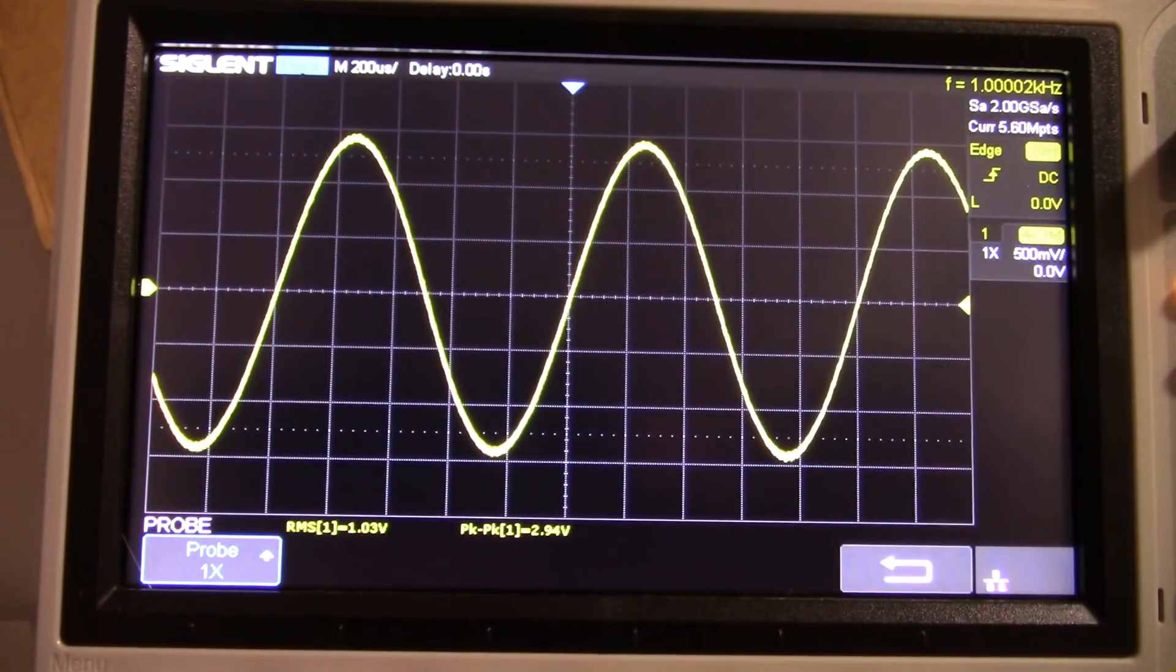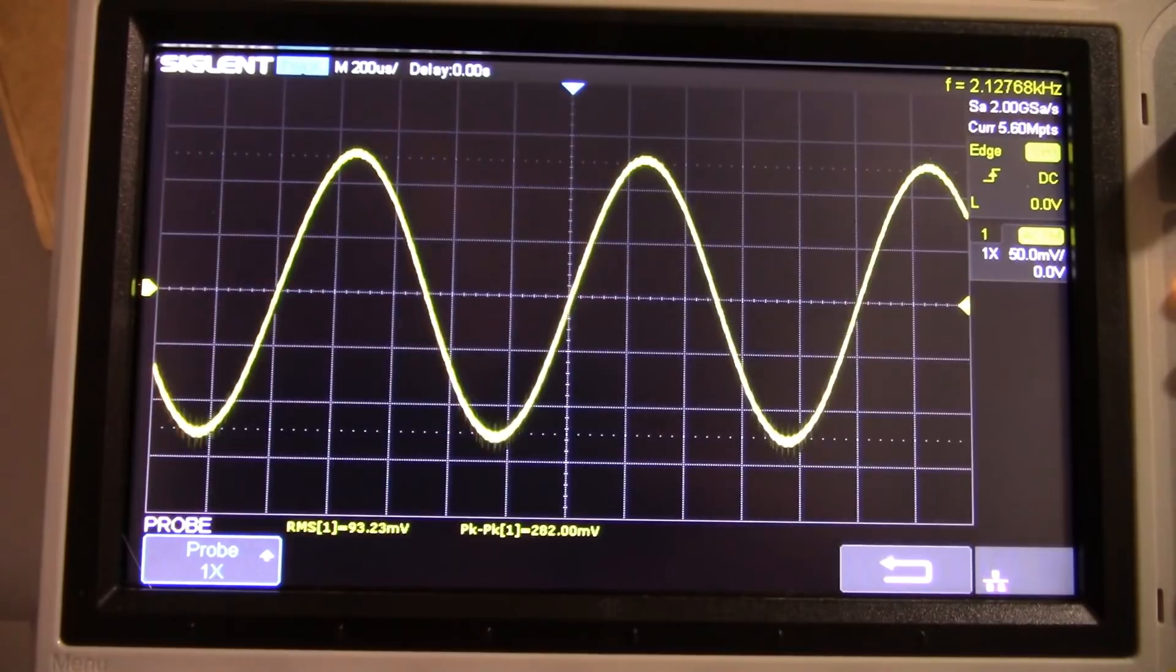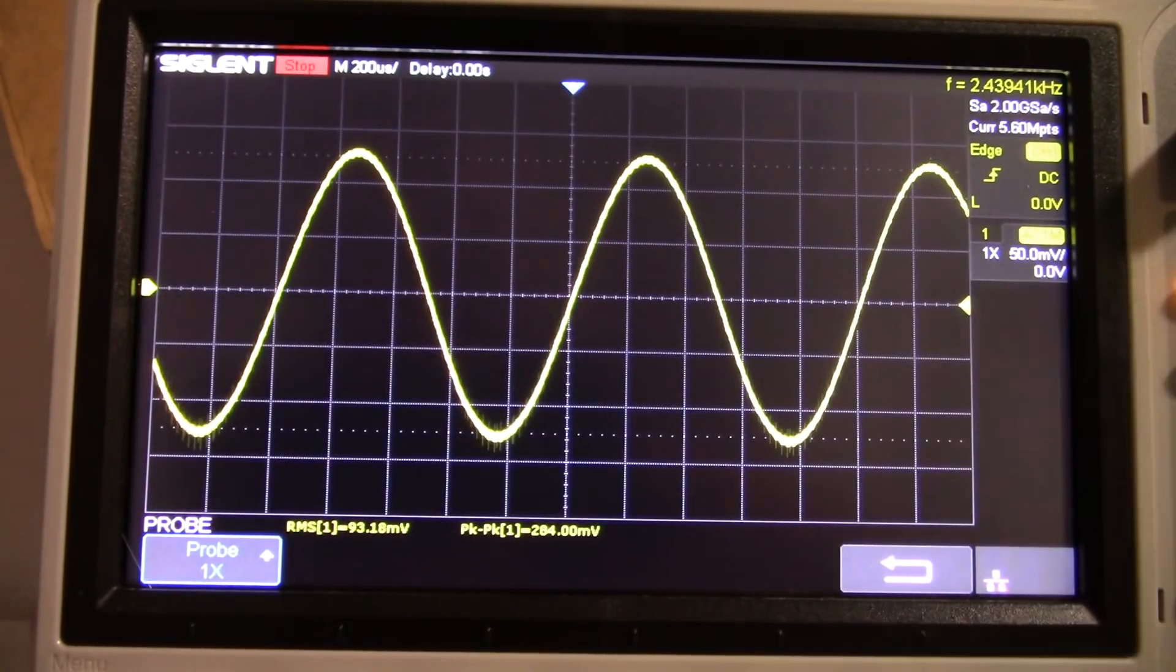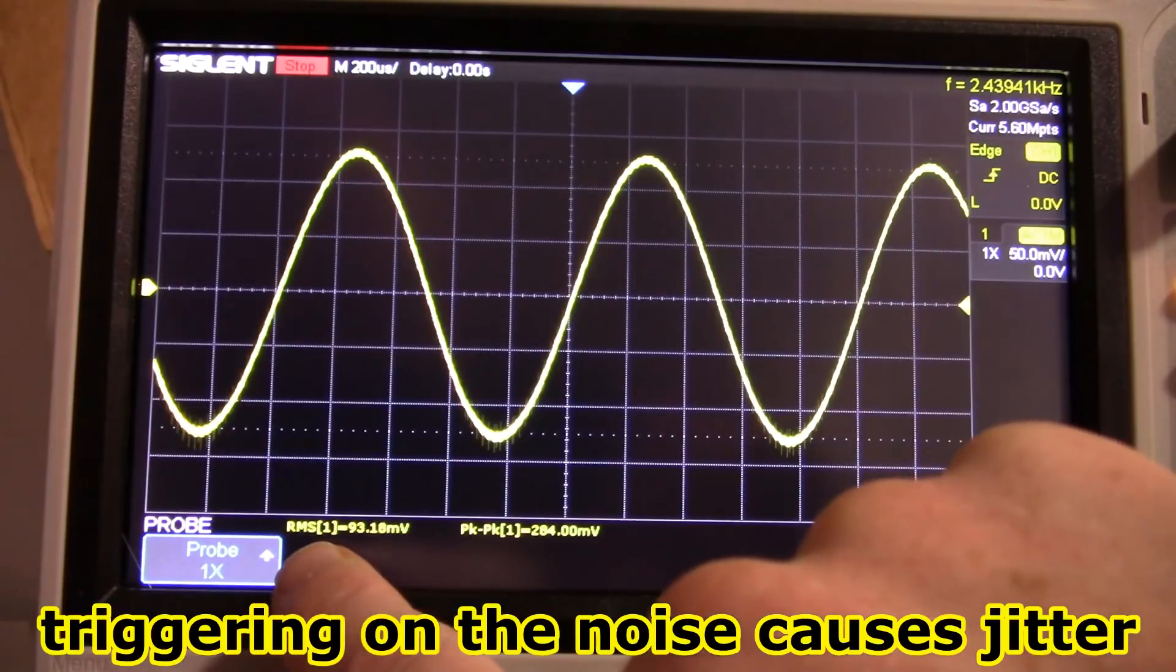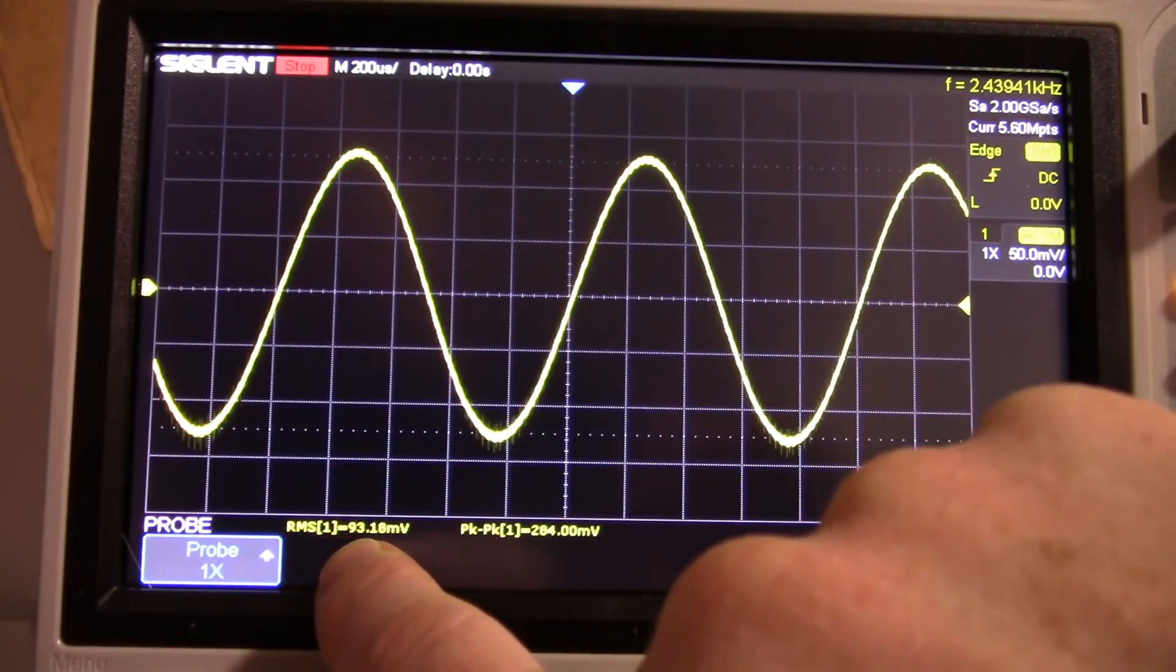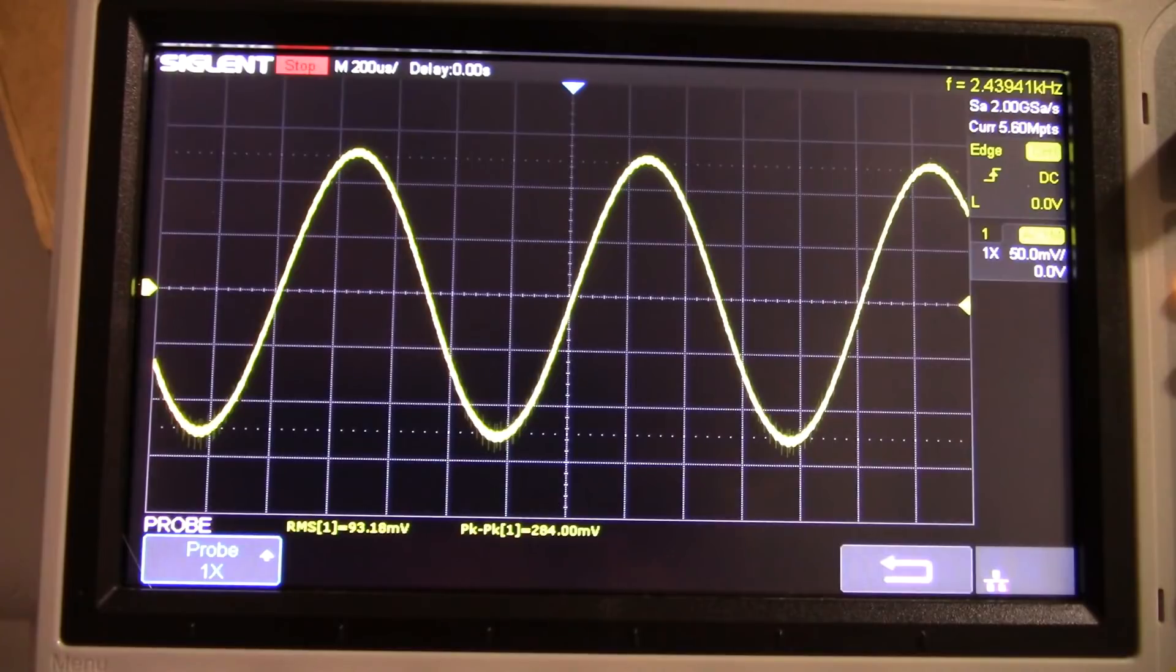So 1.03, so if I move the scope to the input, well, that's kind of annoying. I'm just going to hit the stop button there. So we're getting 93.18, it looks like. So 1.03 divided by 93, I would just say 0.2 millivolts. So the measured gain is 11.05, so that's real close to 11. I'm using 5% resistors, so it's not going to be perfect. But for this example, it's pretty close.